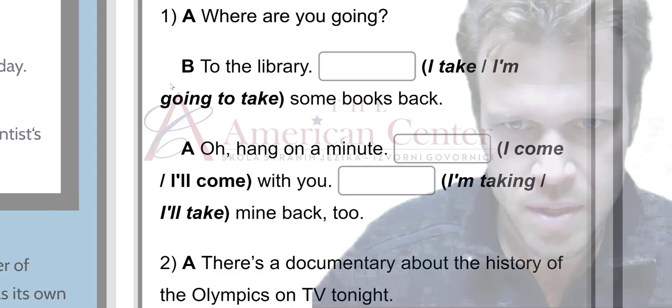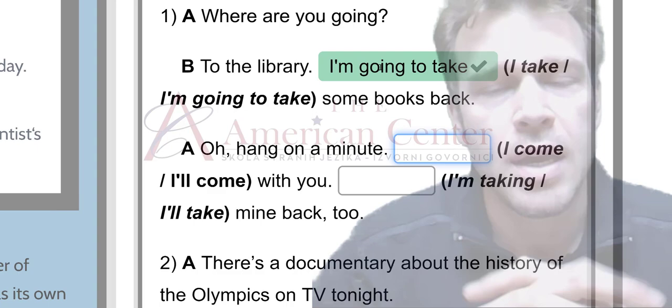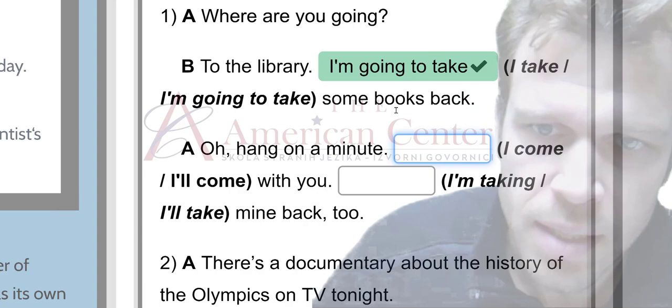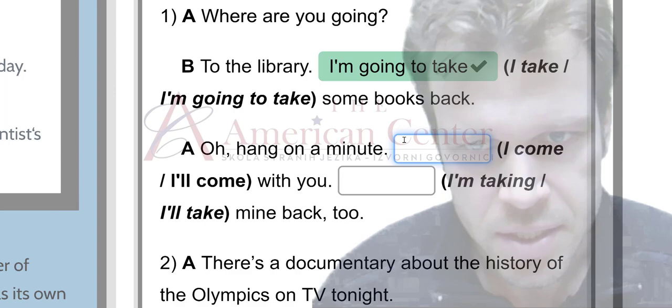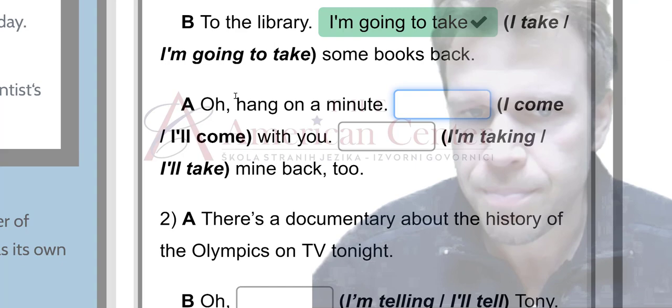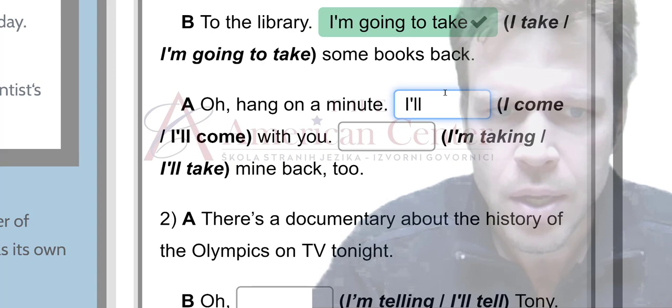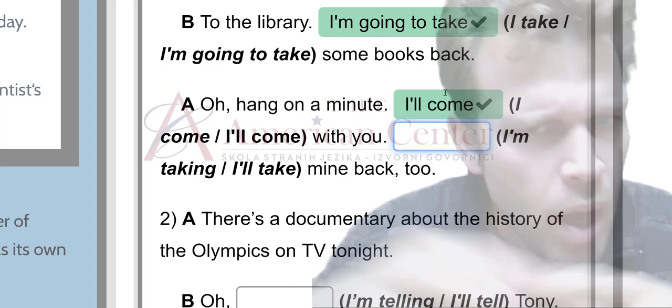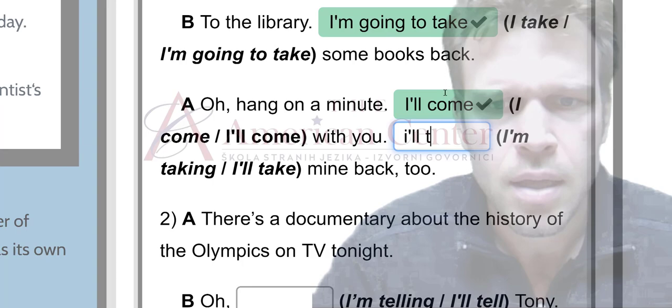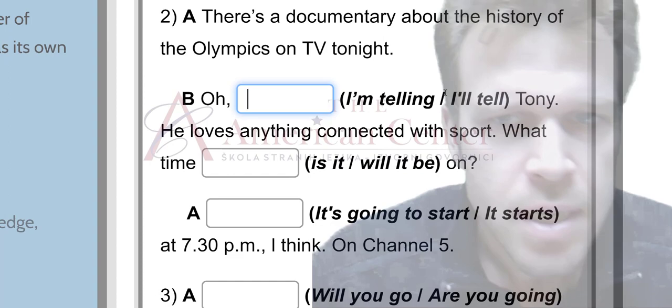Where are you going? To the library. I take or I'm going to take. I'd say I'm going to take. Versus I take. I take books there every day. Moreover, we could say I'm taking some books back. However, that is not a choice, but it is plausible. So, eight, a, oh, hang on a minute. I come, I'll come. This is spontaneous, right? We're emphasizing spontaneity here. I'll come. We don't think about this. This is acting on impulse. I'll come. With you. You know what? Huh? You'll come? Huh? Sure. I'll take mine back too. This is another impulsive, spontaneous decision. We didn't think, we didn't premeditate on this. Let's look at number two.